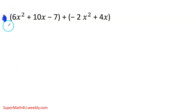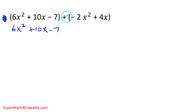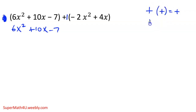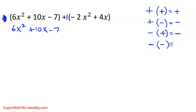Because there's nothing on the outside, I can get rid of the parentheses and rewrite everything: 6x² plus 10x minus 7. In front of this parentheses there's a plus — technically a plus 1. A positive is not going to change anything on the inside. A positive times a positive gives you a positive. A positive times a negative gives you a negative. A negative times a positive gives you a negative. A negative times a negative gives you a positive. When the signs are equal it gives you a positive; when the two signs are different it gives you a negative.